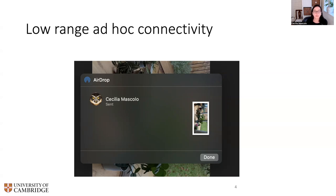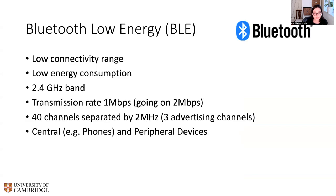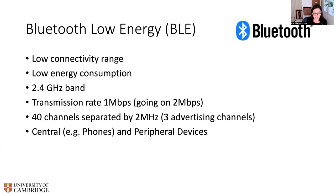Bluetooth is another radio contained in most existing devices. It has a low connectivity range, meaning you can only communicate with devices quite close to you. It also has low energy consumption, and its bandwidth is greatly affected by obstacles. Not only does it have a lower range, but if something is in between, transmission is poor—which turns out to be a useful property for applications like contact tracing. Transmission rate is lower than Wi-Fi, so sending larger data takes longer.